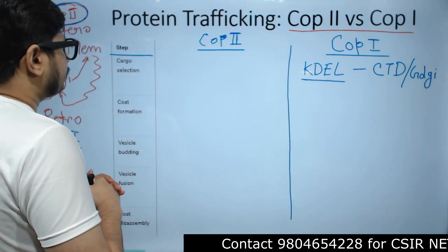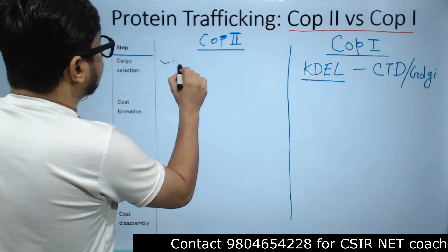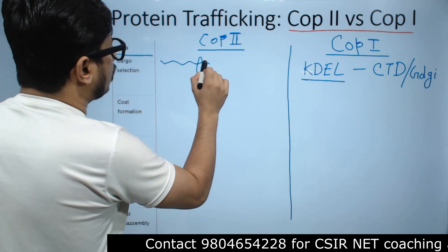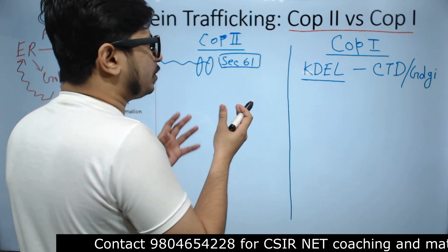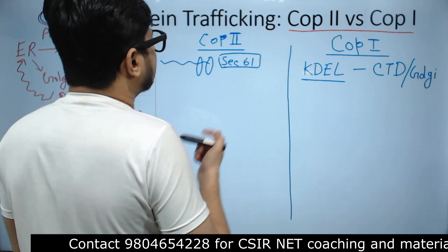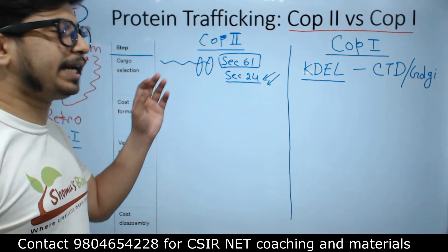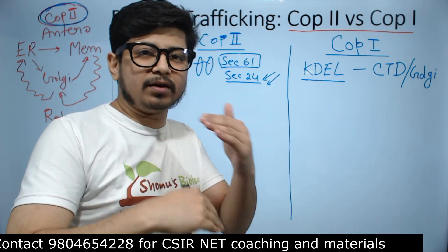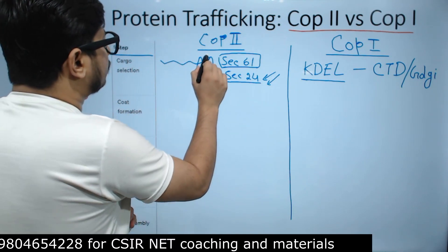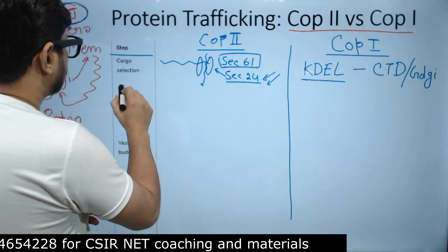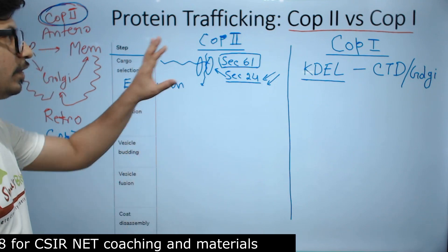Proteins without KDEL are produced near the endoplasmic reticulum and, once produced, are in contact with a translocon known as SEC-61 — the common one used for secretion. In the case of COP2, they also utilize SEC-24, which is specifically designed to interact with proteins involved in the anterograde pathway. SEC-24, a translocon-associated protein, brings the protein inside the ER lumen — so the ultimate journey goes from cytosol to the ER lumen in COP2-mediated transport.